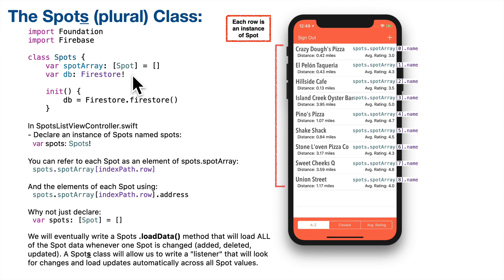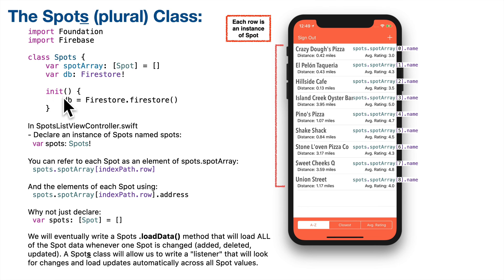We're going to create an instance of Firestore when we first initialize an object from this class, because as long as the spots object lives, we want a link to the database to be active so that we can listen for any changes. Because of the way Cloud Firestore is initialized in our app, we need to declare an instance of our Firestore database - we'll call that DB. It's an implicitly unwrapped optional, declared here but initialized in the initializer.